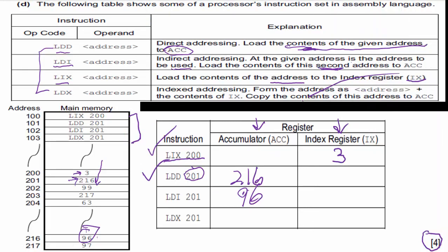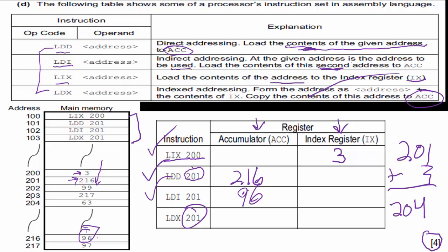Then LDX 201: indexed addressing means form the address as the given address plus the contents of the index register, then copy those contents to the accumulator. The index register holds three. So 201 plus 3 equals 204. I go to address 204 and see 63, which I put into the accumulator. Just like that, we've picked up another four points on our Cambridge exam.